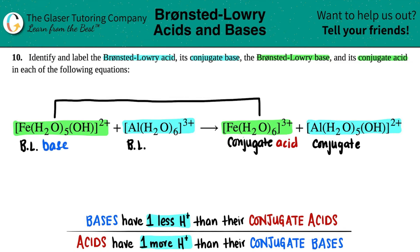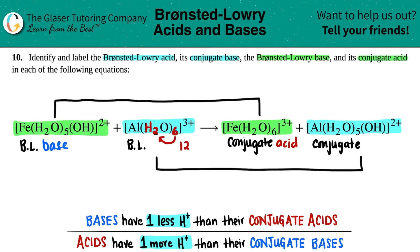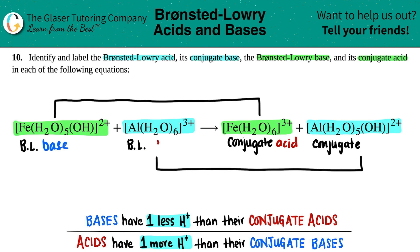Now let's do the same thing with the blues. This pair — Al(H2O)6 and the other one on the other side. I have two hydrogens with a six outside — two times six is 12. Coming over here, I have two hydrogens with a five outside — two times five is 10 — then that lonely hydrogen again, so 10 plus one is 11. Twelve versus 11: acids always have one more, so this has to be the Bronsted-Lowry acid, and then the other part is the base.